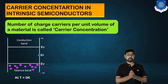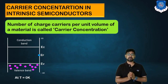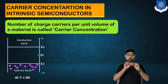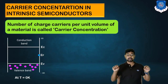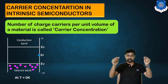Looking at the first diagram — it is at zero Kelvin, T equals zero Kelvin. At that temperature the semiconductor works as a perfect insulator. When it is working as an insulator, all the electrons are locked in the valence band. There is no single electron in the conduction band.